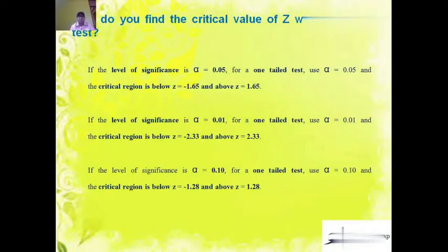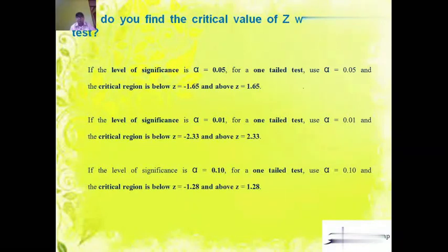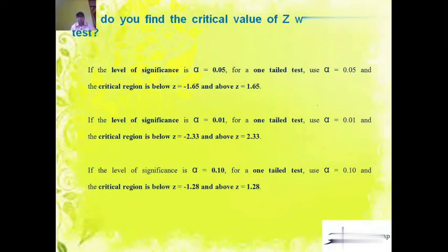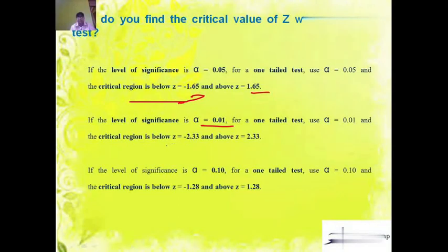If the level of significance is 0.05 for a one-tail test, we take the full alpha — unlike the two-tail test where we take alpha by 2. The critical region is below minus 1.65 and above 1.65. If the level of significance is 0.01, the critical value is minus 2.33 on the left side and above plus 2.33 on the right side.